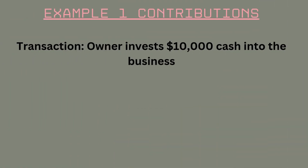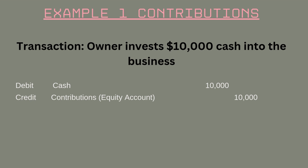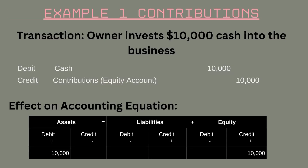Let's look at an example. Example number one: owner's investment. Suppose an owner invests $10,000 cash into the business. This will result in this journal entry: you will debit cash for $10,000, and credit the owner's capital account for $10,000. The credit to the owner's capital account increases the equity.